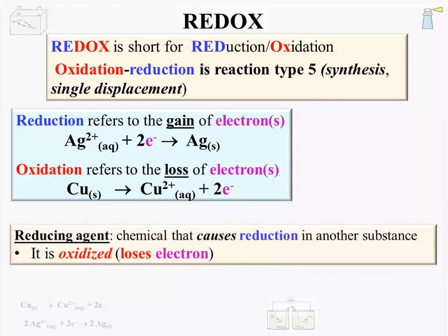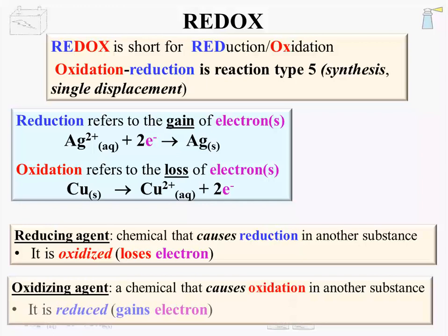It makes the study of electrochemistry much easier if these terms are kept straight. A reducing agent is a chemical that causes reduction in another substance — it is oxidized itself. An oxidizing agent is a chemical that causes oxidation in another substance.